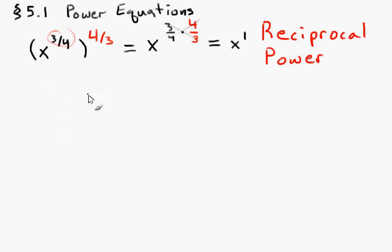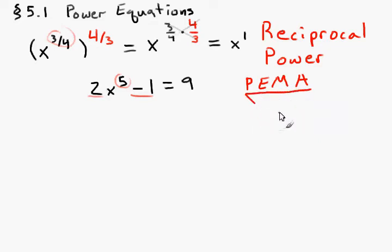So, let's take a look at the equation 2 times x to the 5th power, minus 1, is equal to 9. We're going to use the reciprocal power here. But first, we need to get rid of the other operations. Remember the order of operations. Parentheses, exponents, multiplication, addition. And since we're using inverse-reverse, we're going in the reverse order.